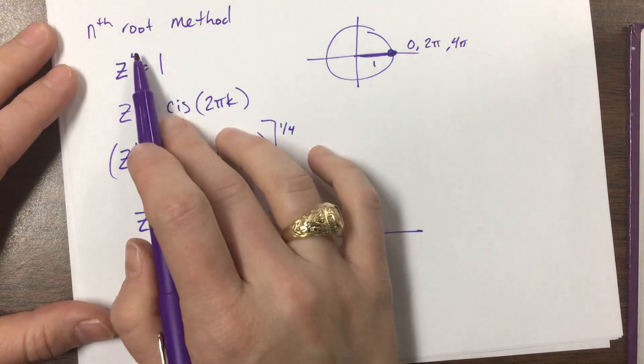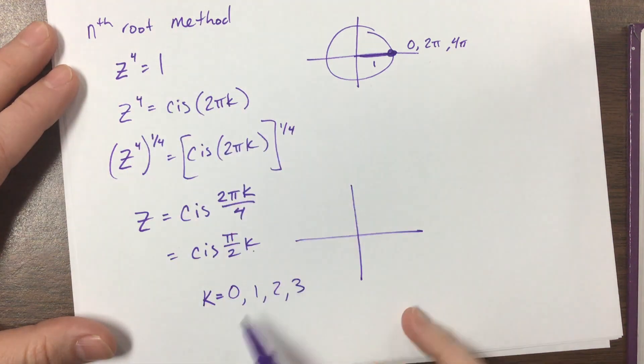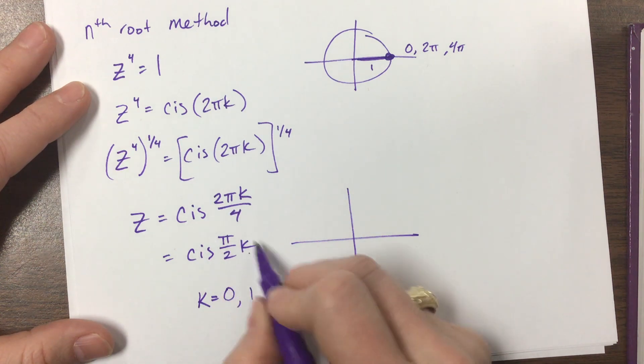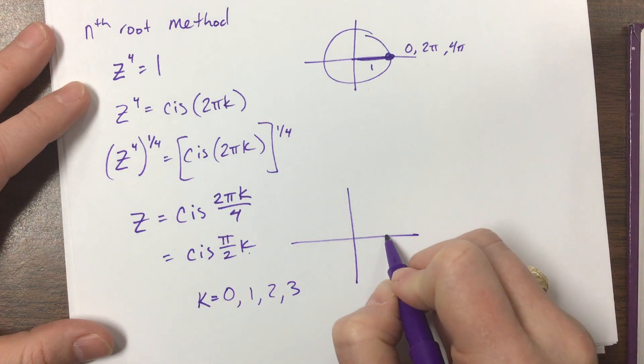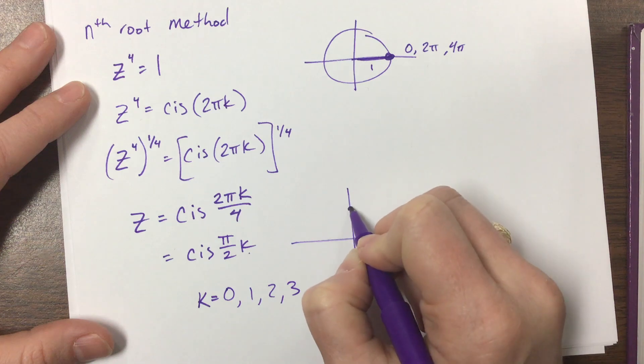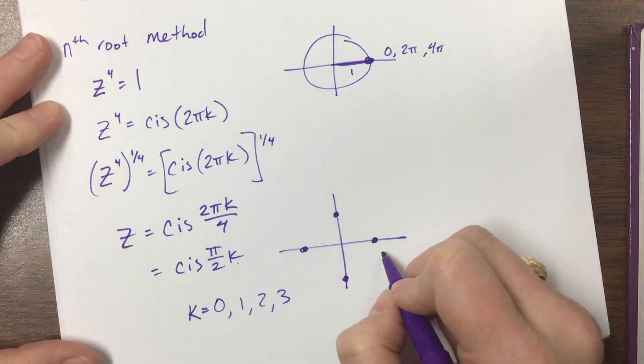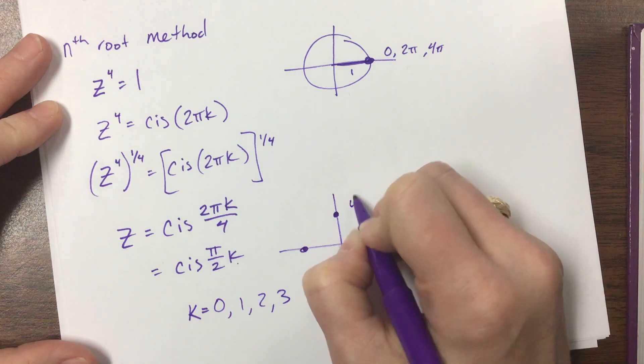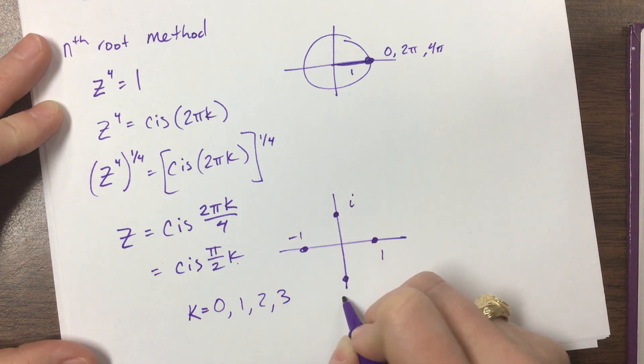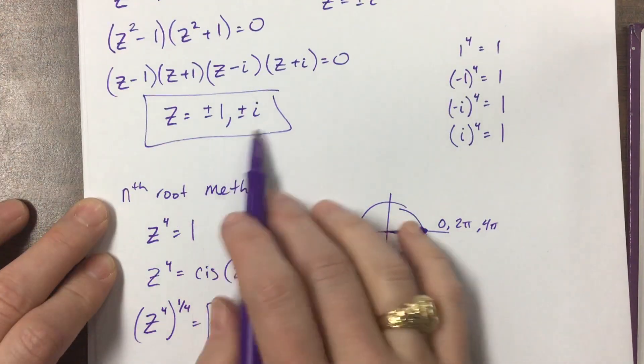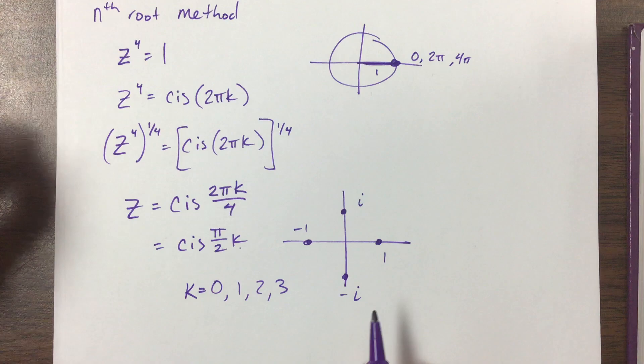So I have 0 times 2 pi, it's just 0, so that's here. And then I plug in 1 pi over 2, 2 pi over 2, 3 pi over 2. And now this gives me positive 1, this is positive i, this is negative 1, and this is negative i. And that's how we can find those, these same values right here using the nth root method.